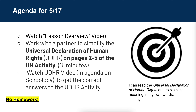Number one, watch the lesson overview video, which is this overview video — so way to go. Step two, you're going to be working with a partner to simplify a document called the Universal Declaration of Human Rights, the UDHR. It's on pages two through five of your UN activity packet that you started yesterday.